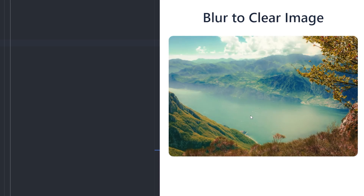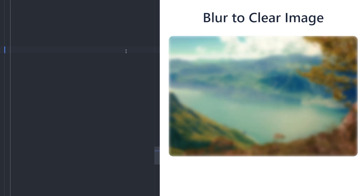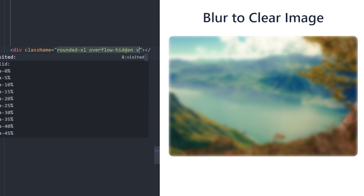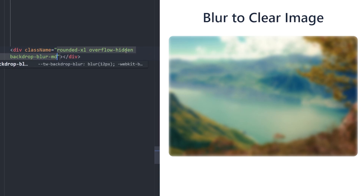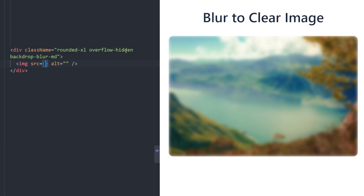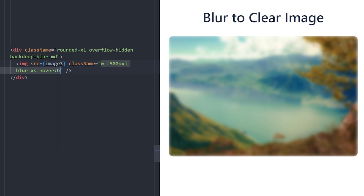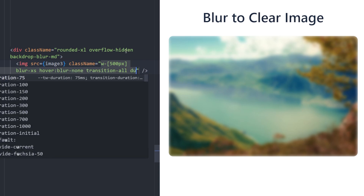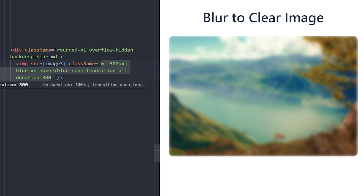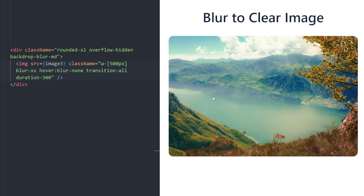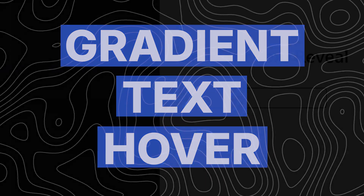Number six: blurry image hover effect — one of my favorites. We have this image with a blurry overlay on top, and when you hover over it we hide that overlay and the image becomes clear. Create a div with rounded corners, hide the overflow, and add a backdrop-blur set to medium. Place the image inside, width 500, and apply a blur filter set to extra-small. On hover, remove the blur. Use transition-all with duration 300 — it works beautifully.